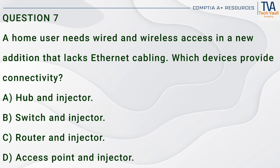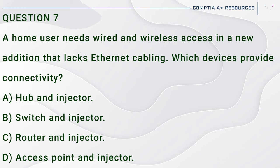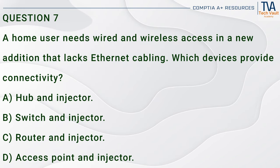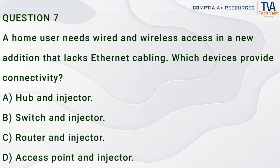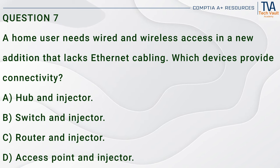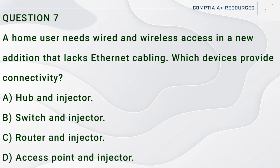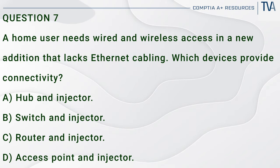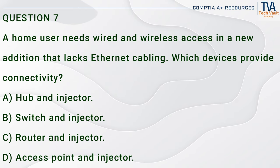Question 7. A home user needs wired and wireless access in a new addition that lacks Ethernet cabling. Which devices provide connectivity? A. Hub and injector. B. Switch and injector. C. Router and injector. D. Access point and injector.